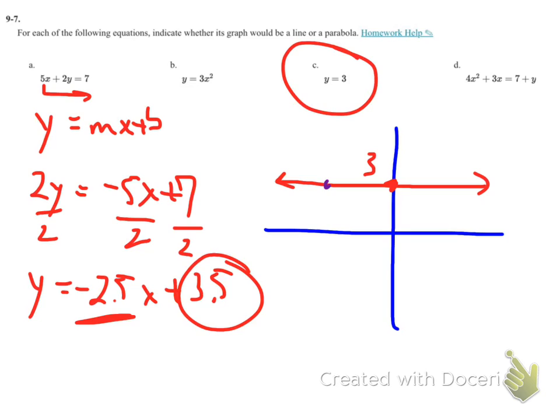The reason why it's a horizontal line is every coordinate point on that line, no matter which one you pick, the x value is going to change but the y value will be 3 every time. So it doesn't matter what coordinate point, your y value is 3 every time. So that's the line y equals 3.